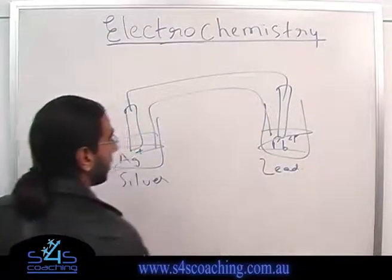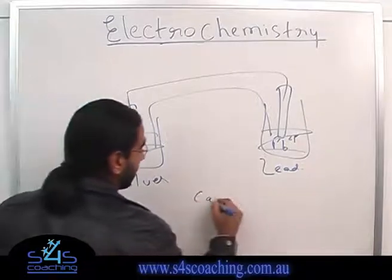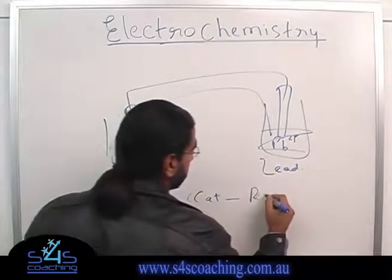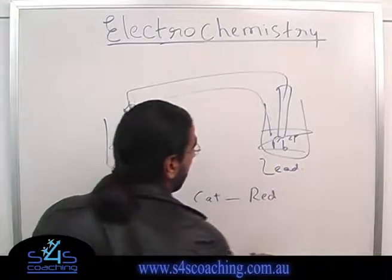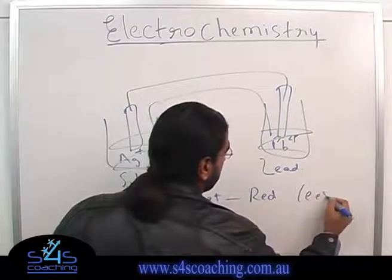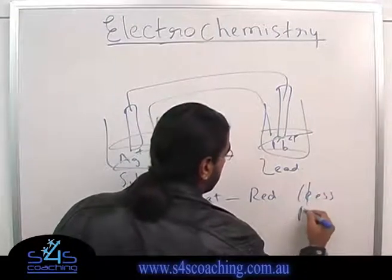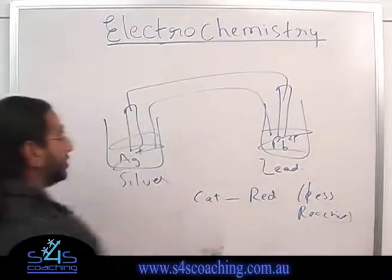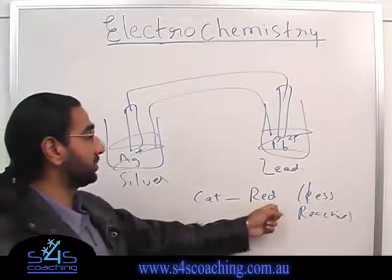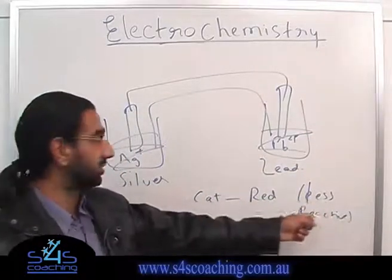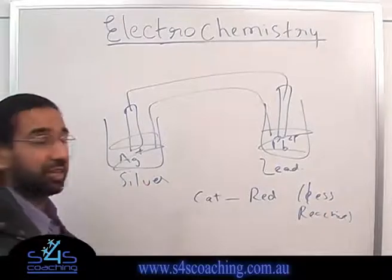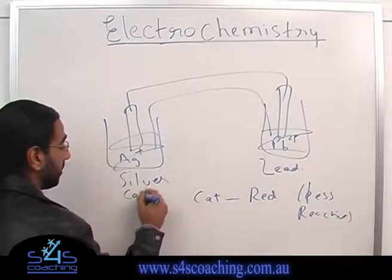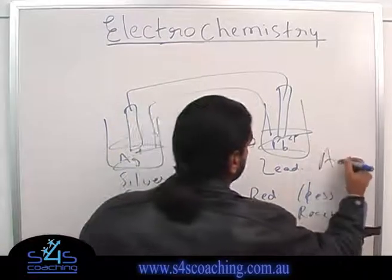We've got to figure out the cathode. The cathode — 'RedCat' — is where reduction happens, and that is the less reactive substance. We know that silver is less reactive. So therefore, silver will be the cathode and lead will be the anode.